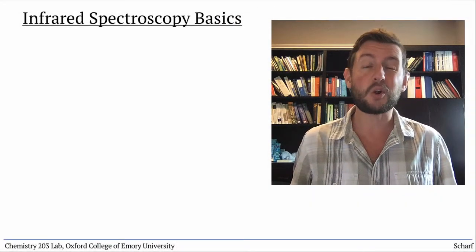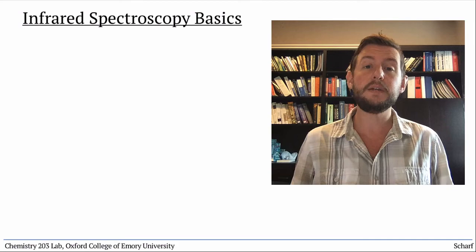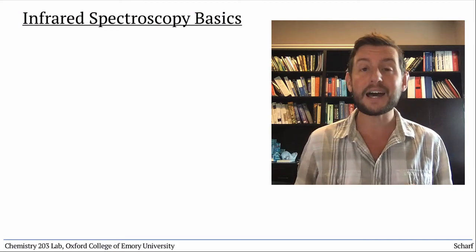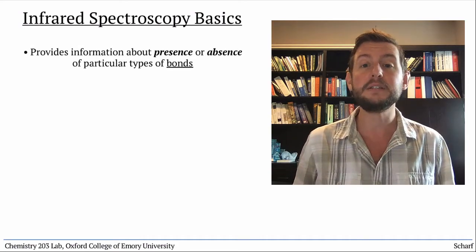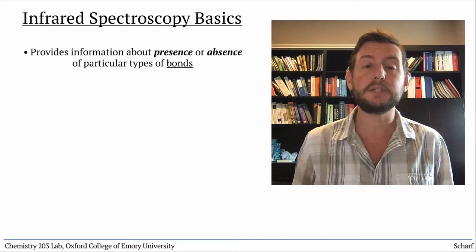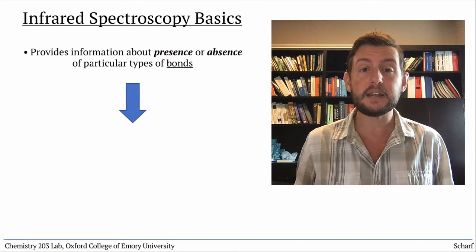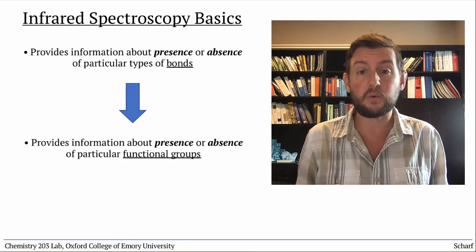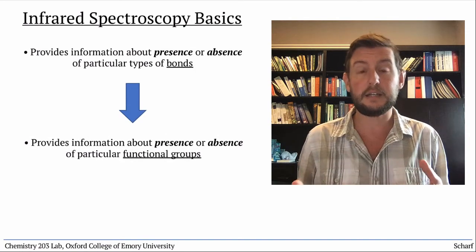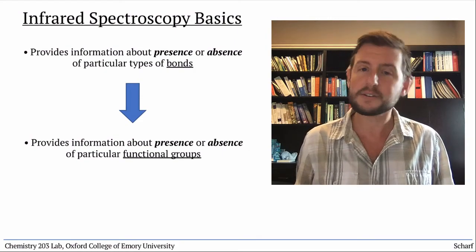We need other techniques to tell us more about the structure of an unknown compound. Infrared or IR spectroscopy gives us insight into the types of bonds present or absent in a particular compound. From this, it can indicate whether particular functional groups are or are not in a compound. So how does it work?